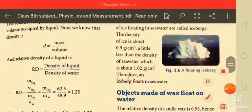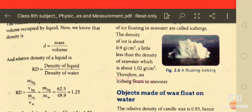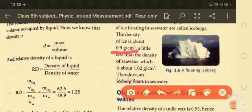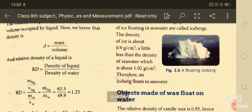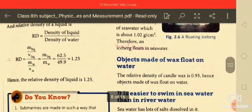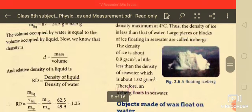Large pieces or blocks of ice floating in seawater are called icebergs. The density of ice is about 0.9 g/cm³, a little less than the density of seawater, which is about 1.02 g/cm³. This is the difference between the density of seawater and icebergs. Therefore, icebergs float in seawater.